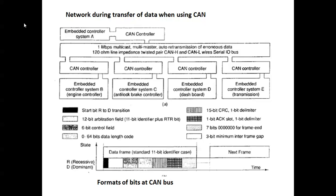Reviewing the CAN frame structure — the 0 to 64 data bits, data length code, and identifier — CAN bus supports 1 Mbps, multi-cast, and multi-master communication with auto re-transmission. It uses 120-ohm line impedance and CAN-H and CAN-L wires as a serial input/output bus.